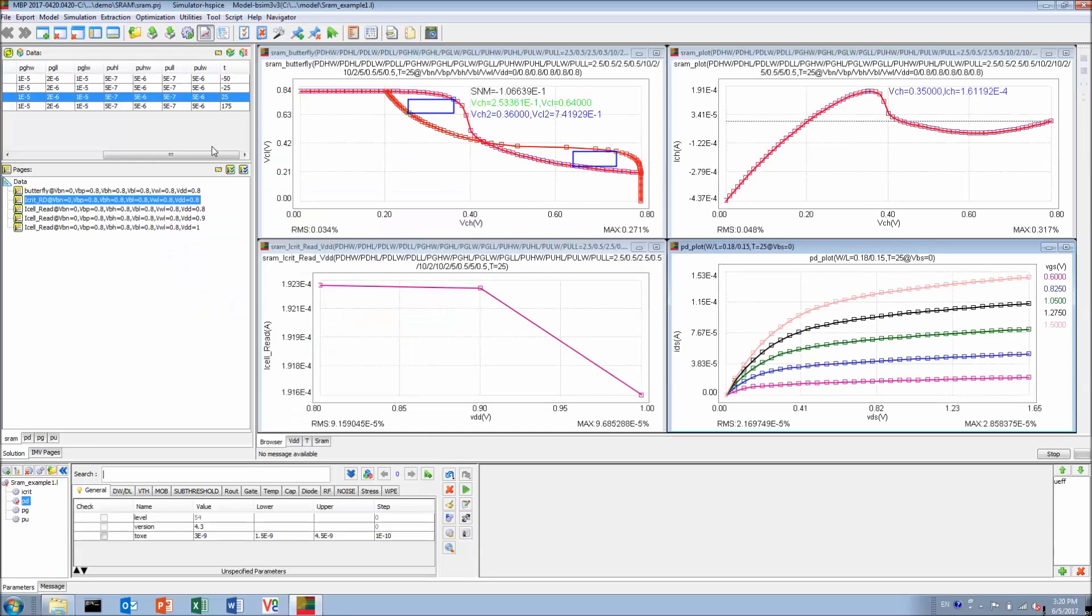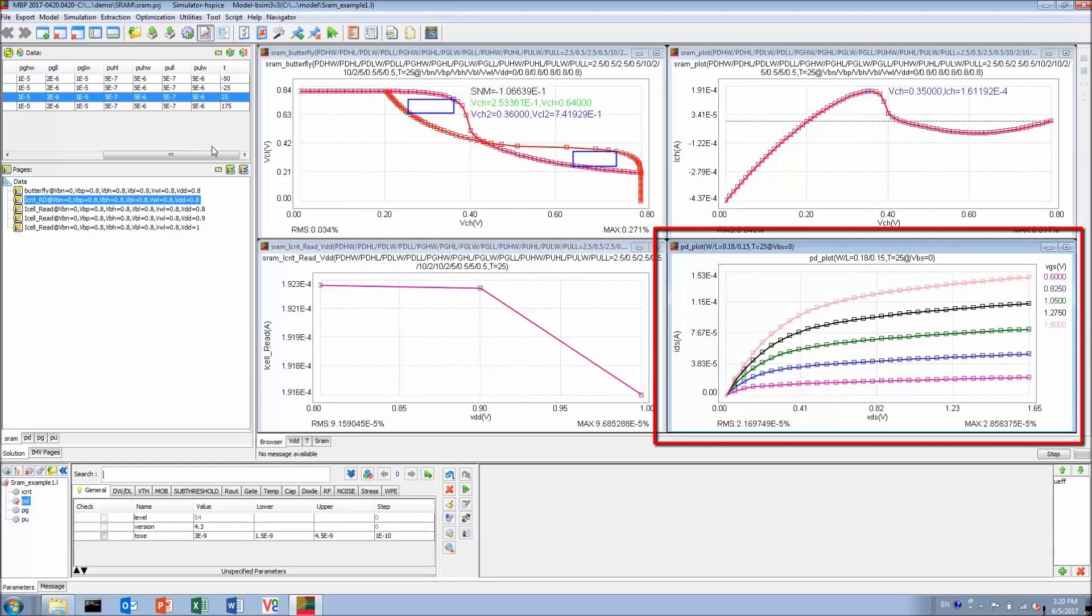All right, this is the MBP GUI. We now see a 2x2 graph with the butterfly curve on the top left and the N-curve for critical read current on the top right. Its VDD dependency graph is on the lower left and an additional IDVD graph from one of the transistors showing on the lower right.